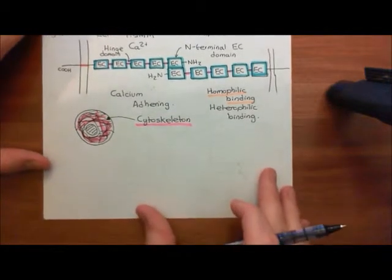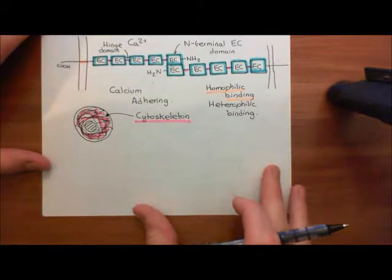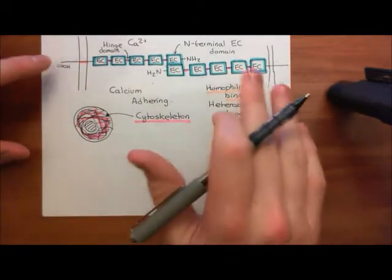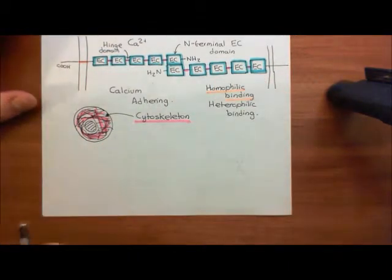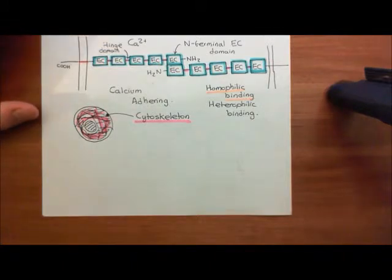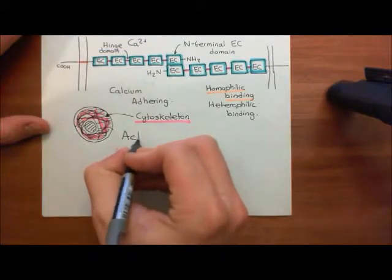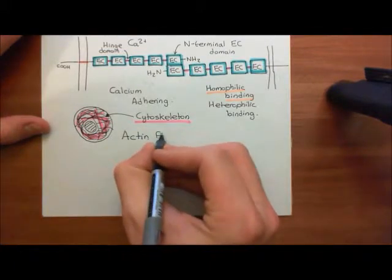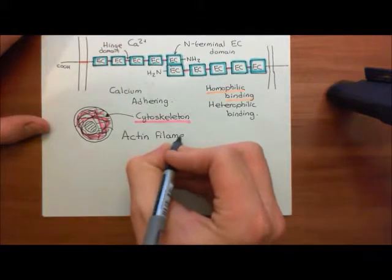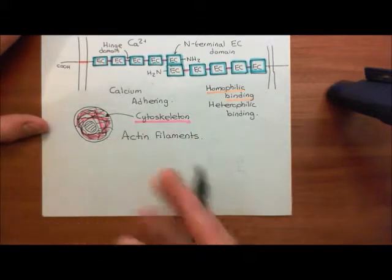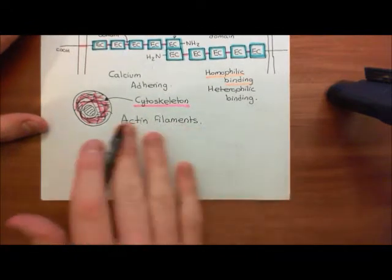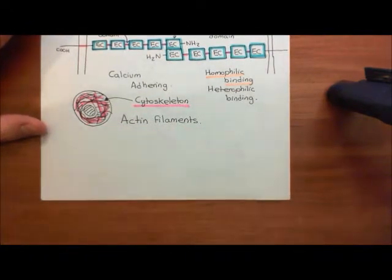We now want to look at one of the components of the cytoskeleton — specifically the component that's going to be relevant for discussing classical cadherins. We'll see another component later when we discuss desmosomal cadherins. The component we are going to talk about now is actin — actin filaments — which are one of the key components of the cytoskeleton of all cells. Let's have a discussion of the structure of actin filaments.